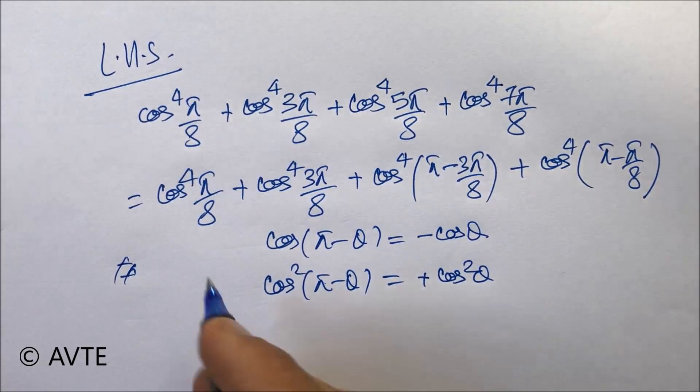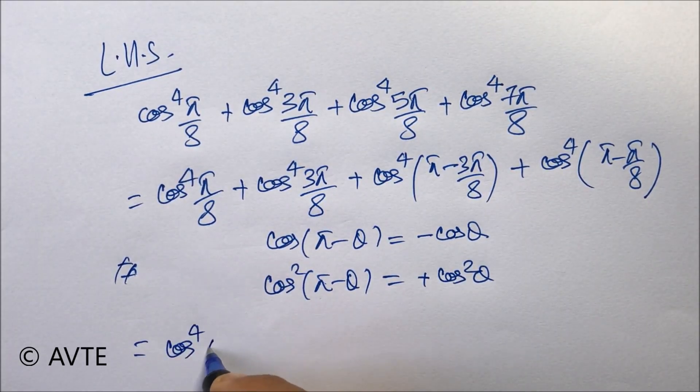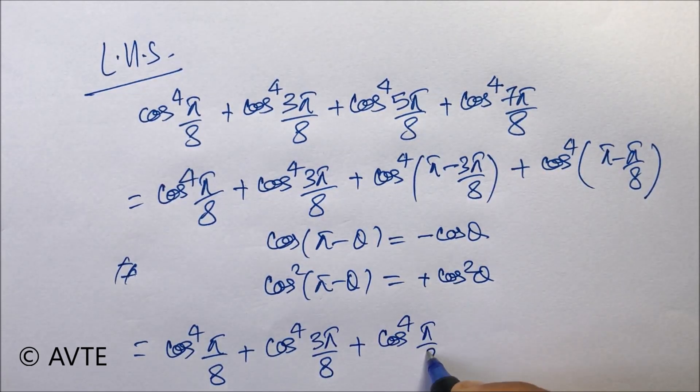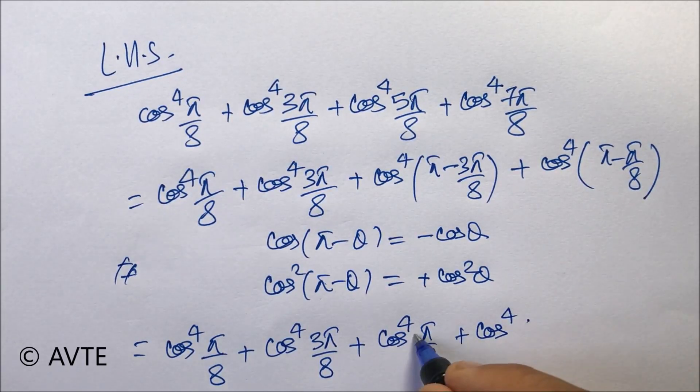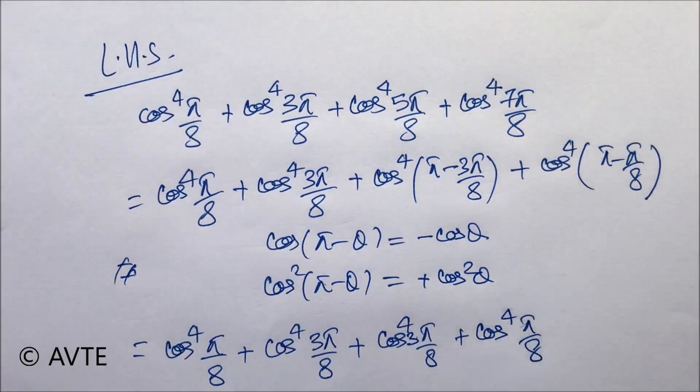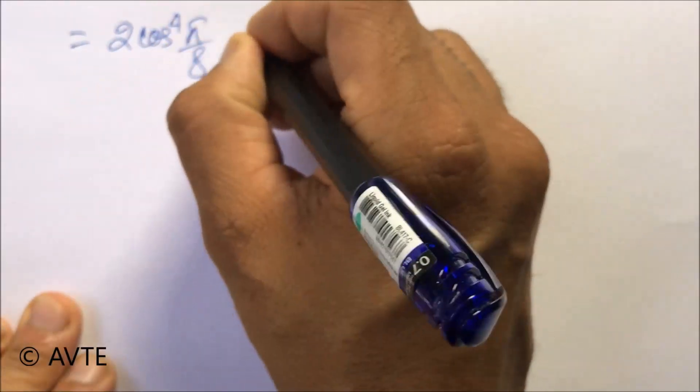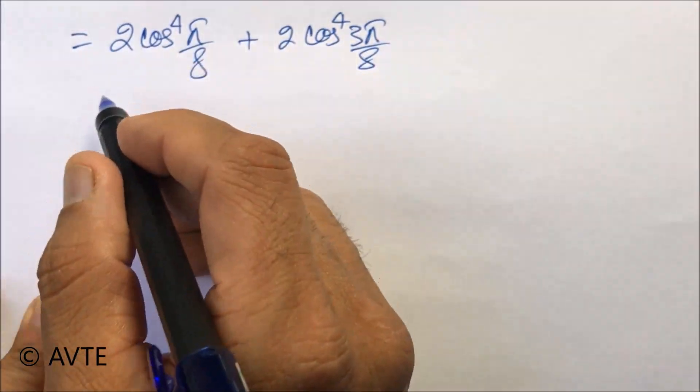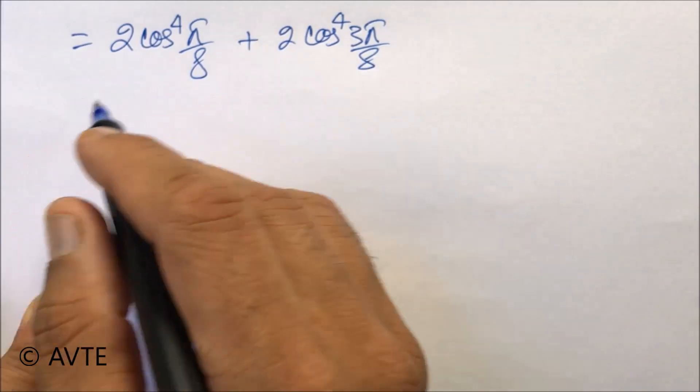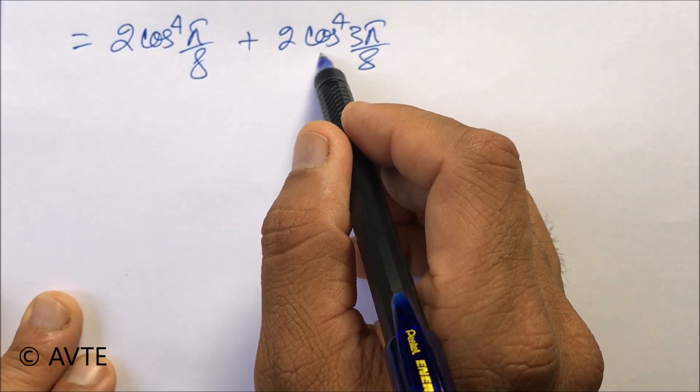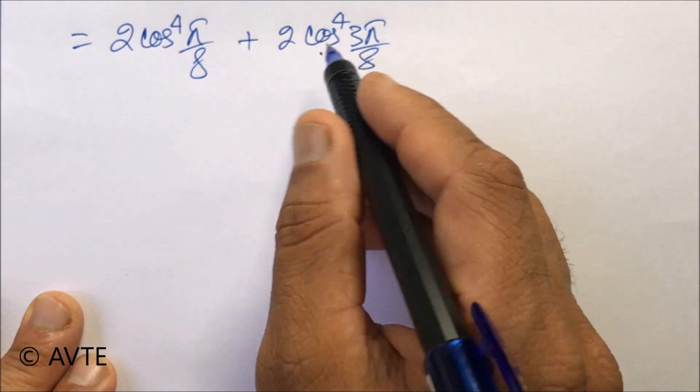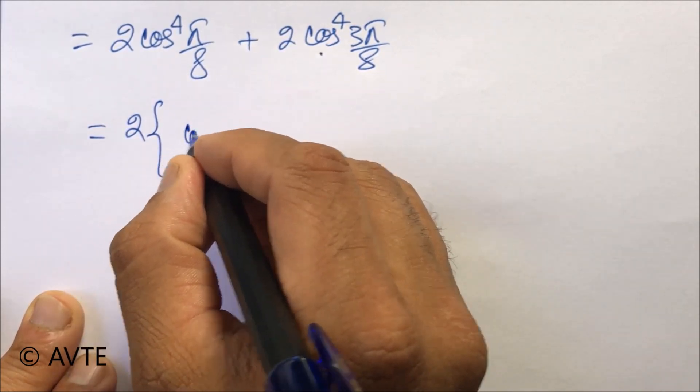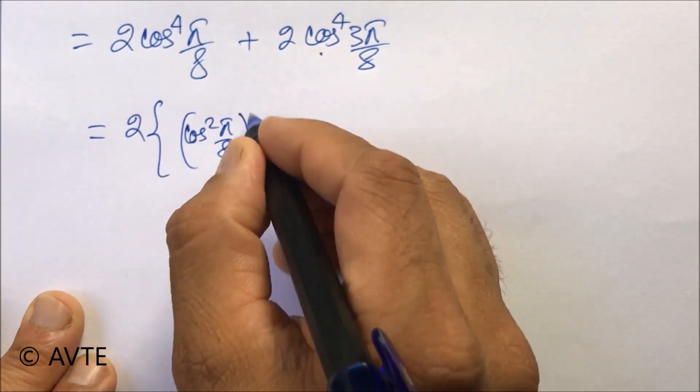Now the next step: you have two or three different methods to convert cos to sin, but we will maintain cos to cos, and this is what we are doing. We are writing it like square square.